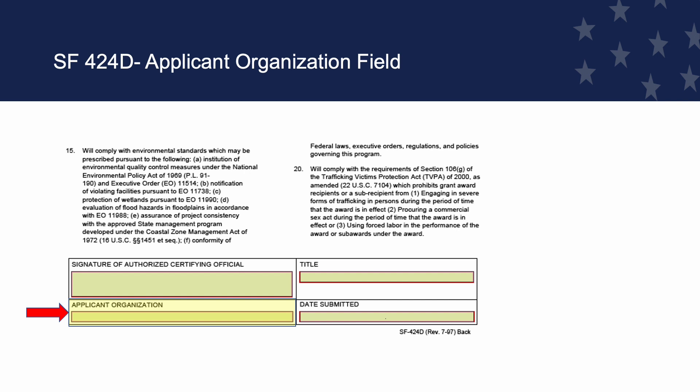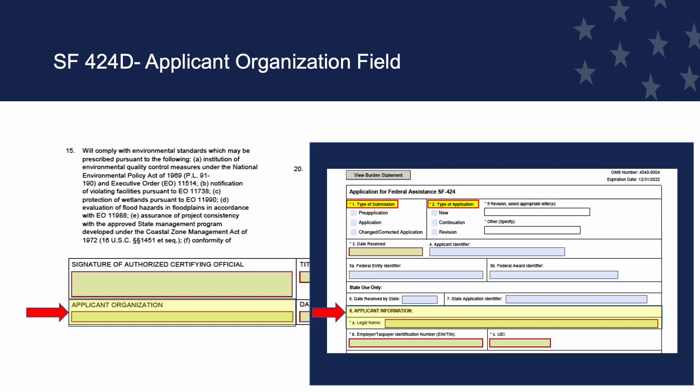This field needs to match SF-424, Application for Federal Assistance, Field 8A. This is a required field. If submitting through Grants.gov, this field is auto-populated.